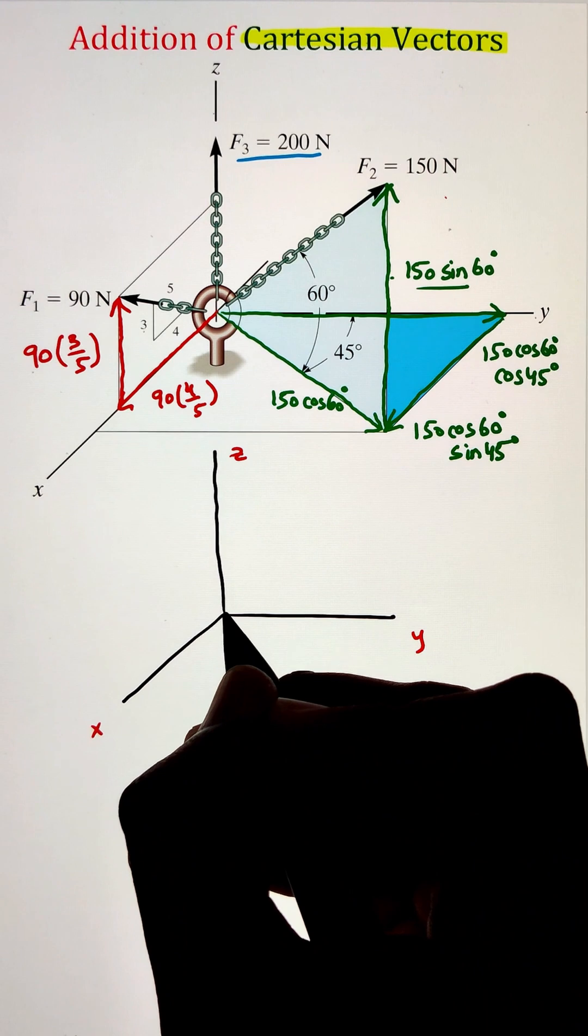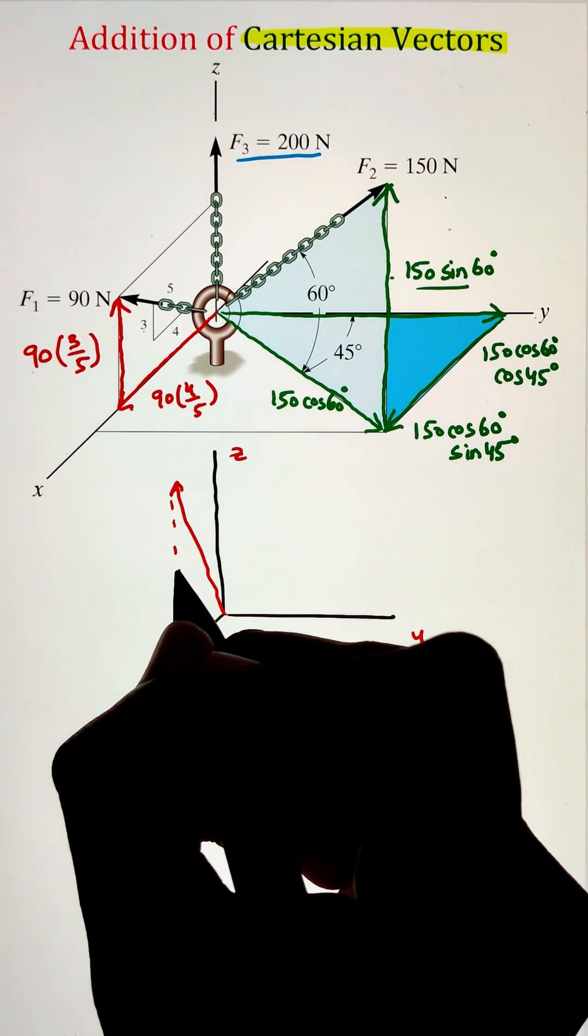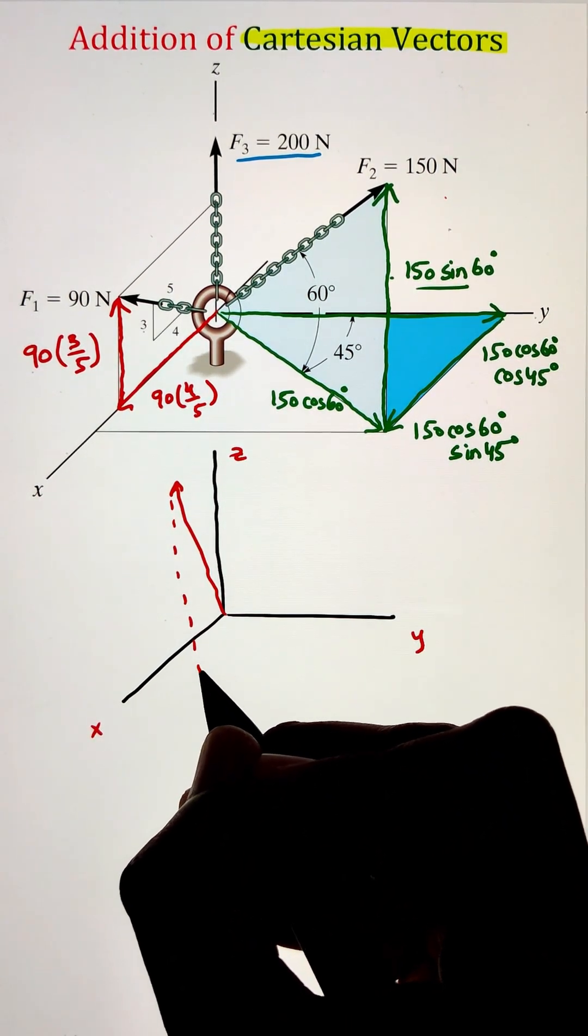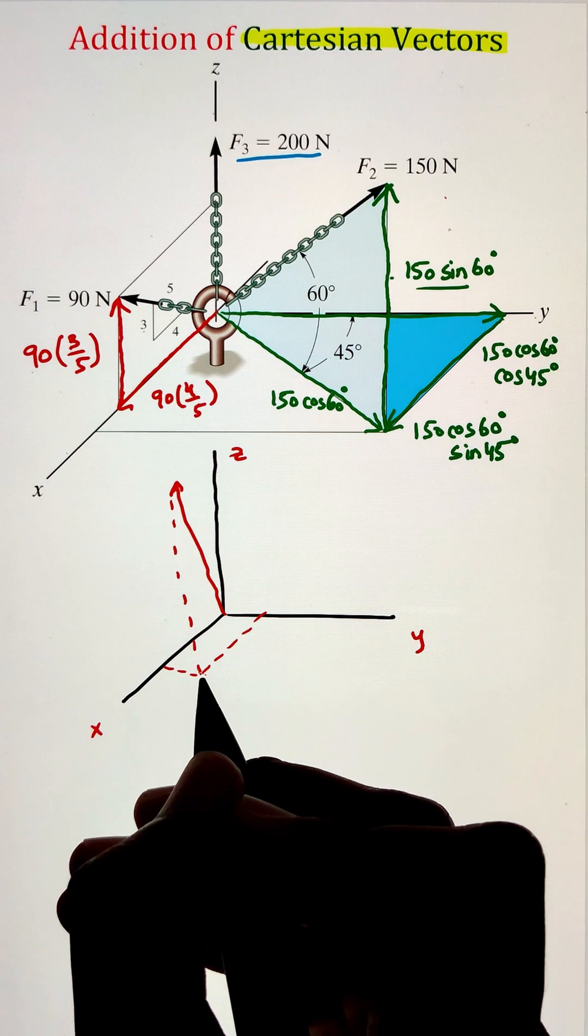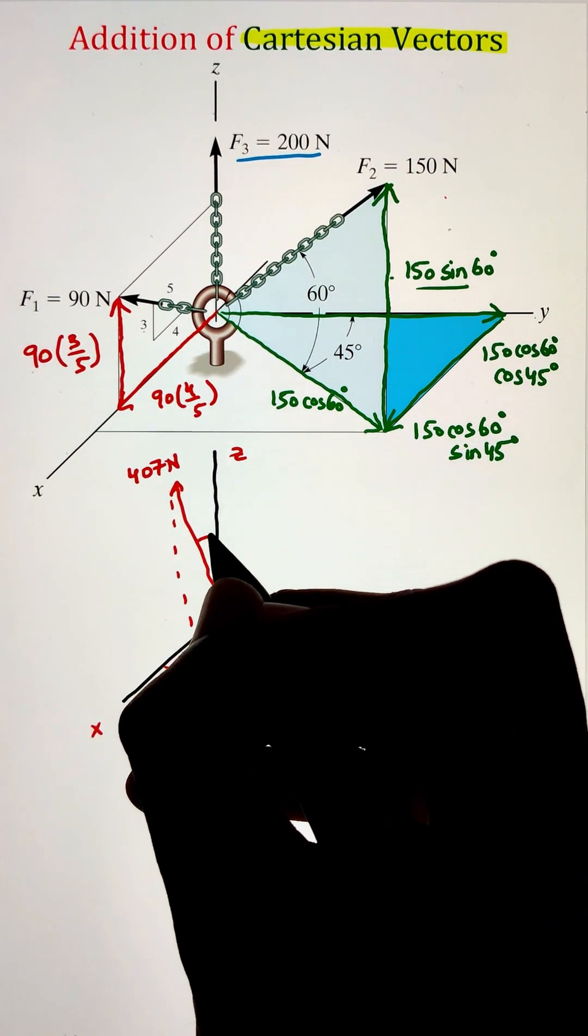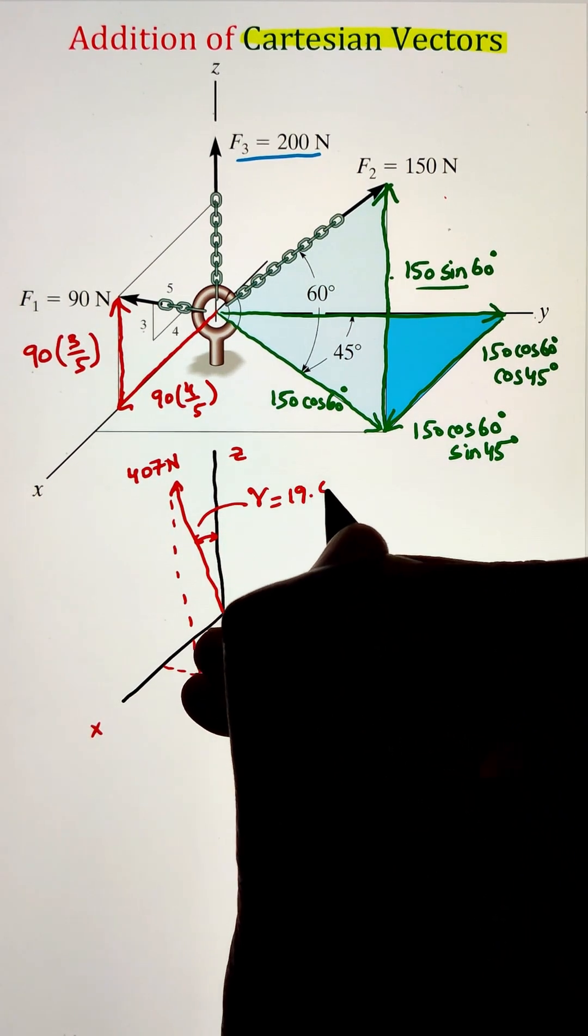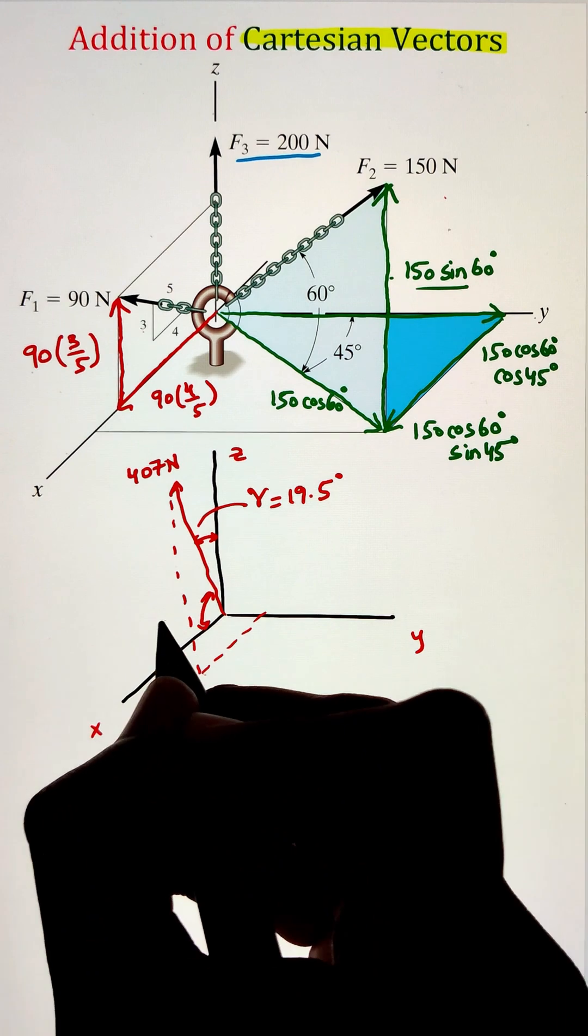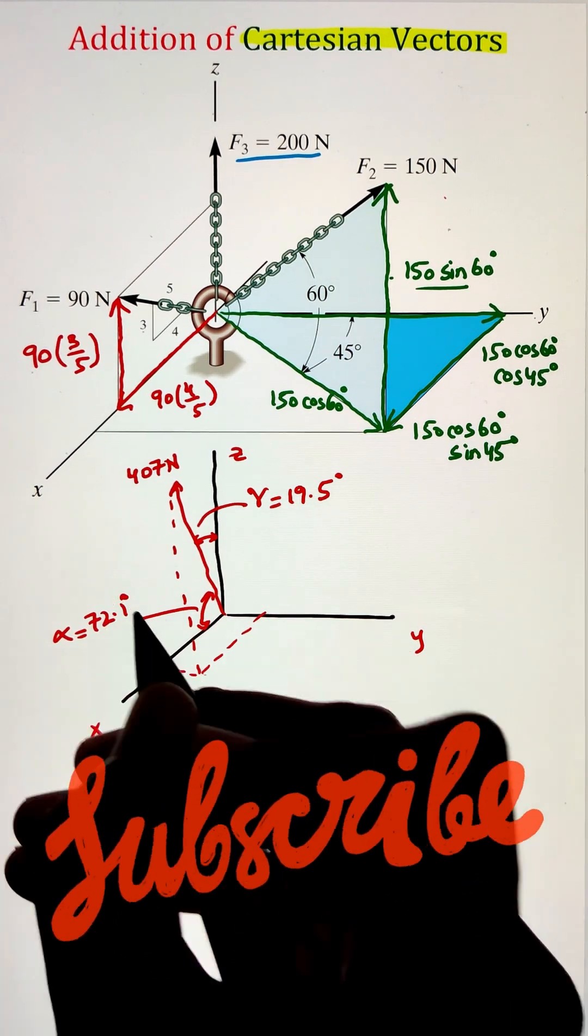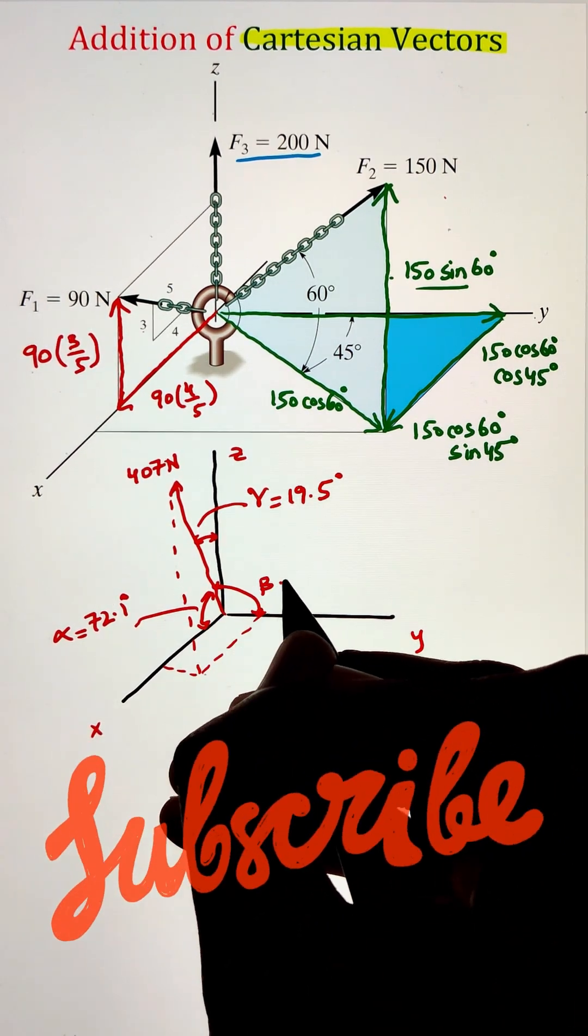Now, finally, let's go ahead and plot this force on the X, Y plane. Here, the magnitude of the force will be given as 407, whereas the angle it makes from the Z axis is 19.5. With the X, it is 72.1. And finally, with the Y beta, it is 82.5.